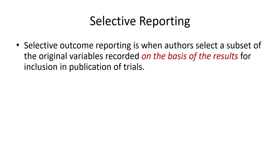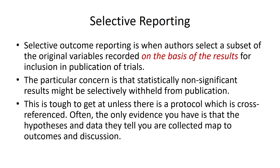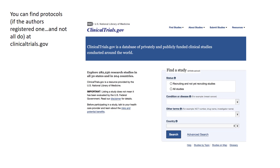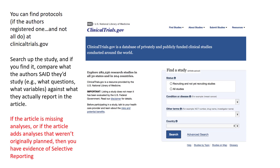Now let's talk about selective reporting. Selective outcome reporting is where the authors select a subset of the original variables recorded on the basis of the result — meaning they only report the results of tests where it worked out the way they expected, and don't report where there were no statistical differences. The particular concern is that statistically non-significant results might be selectively withheld from publication. You can find protocols, if the author registered one, at clinicaltrials.gov. Search up the study, and if you find it, compare what the authors said they would do against what they actually report in the article. If the article is missing analyses, or adds analyses that weren't initially planned, then you have evidence of selective reporting.